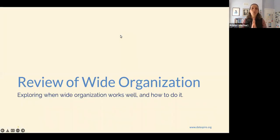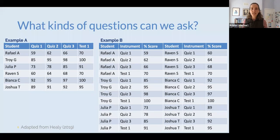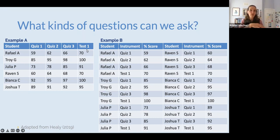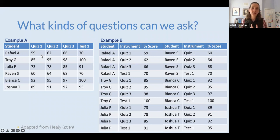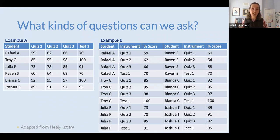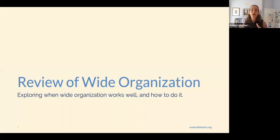Let's think about wide organization. We could also think of this data as different trials that student groups are doing — dropping a car down a ramp, or different garden plots where we're counting numbers of bugs we see. We're talking about students and quizzes, instruments and scores, but use those to think about all the other different kinds of data we look at. So — back to wide organization. What is it?